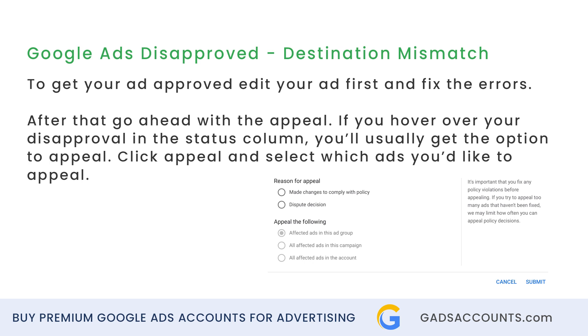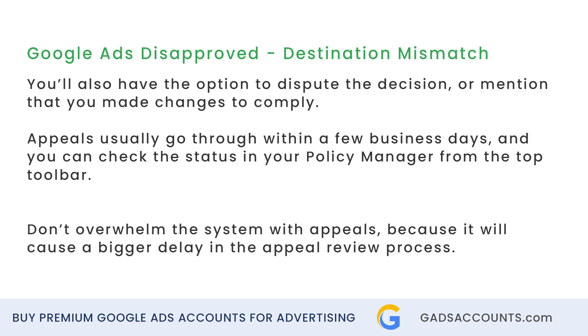After that, go ahead with the appeal. If you hover over your disapproval in the status column, you'll usually get the option to appeal. Click appeal and select which ads you'd like to appeal. You'll also have the option to dispute the decision or mention that you made changes to comply.